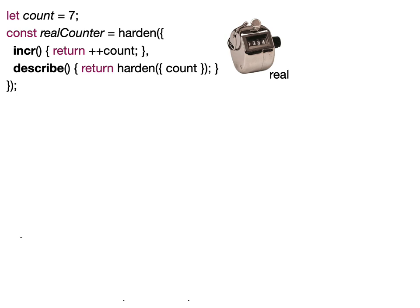It has an increment method that only counts up, and the assay is provided by this described method that returns the current count. It's self-assaying, it's describing itself, but its self-description is as credible as its behavior itself — it's coming from the same piece of code.